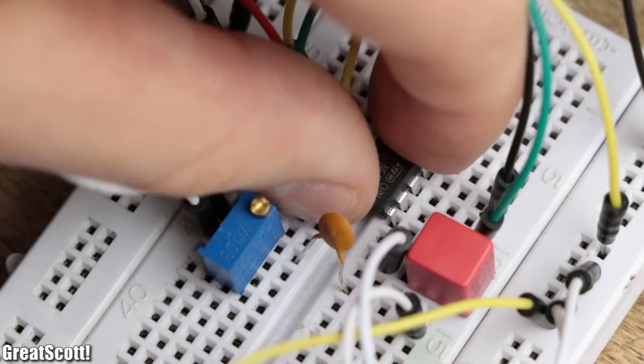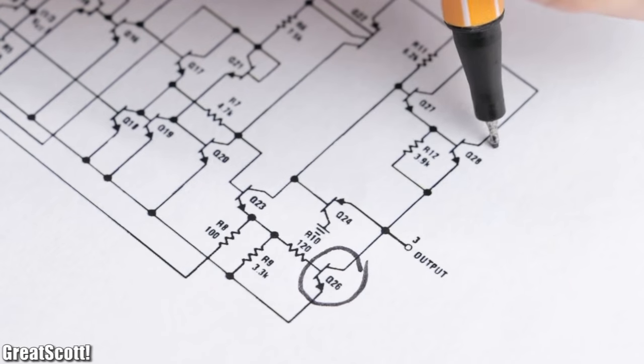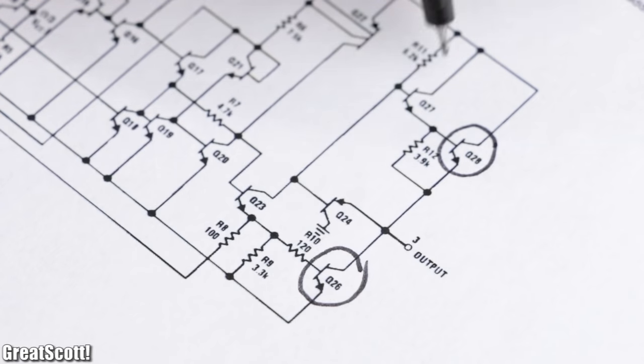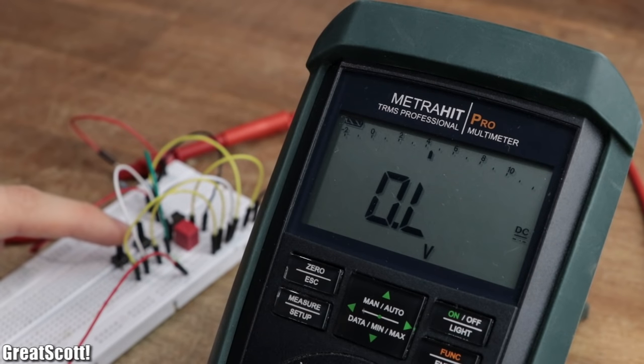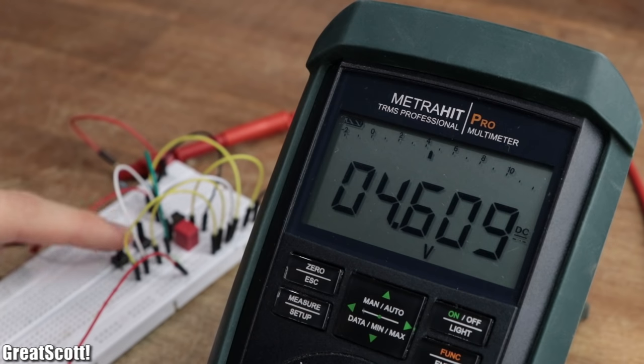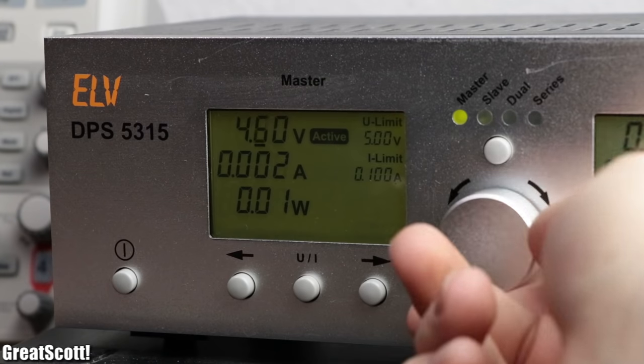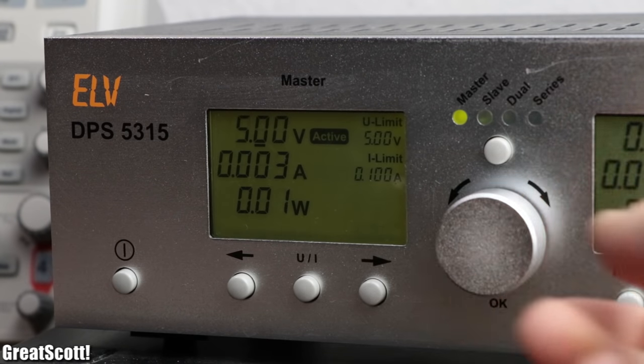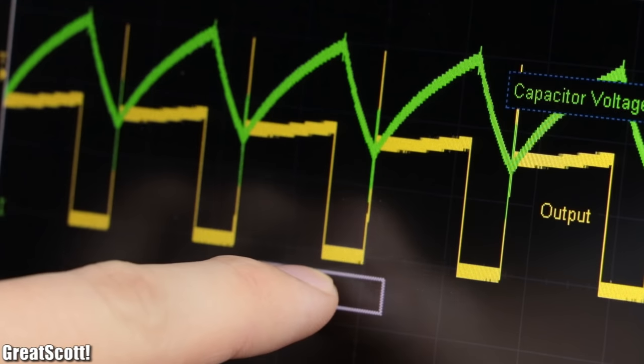The problem is the NE555 itself, because it uses bipolar transistors to switch its output on and off. While the off voltage is close to ground, the on voltage is around 4.6 volts at a supply voltage of 5 volts, which creates an unsymmetrical charging behavior.